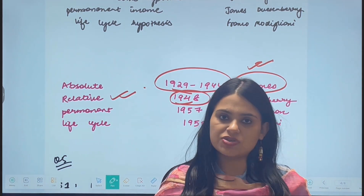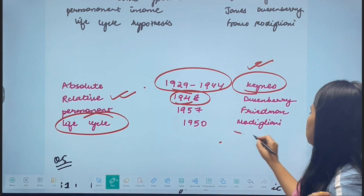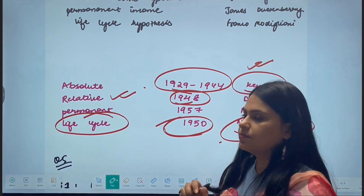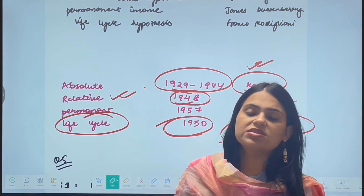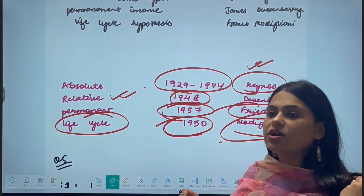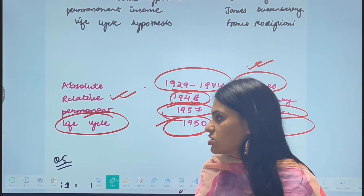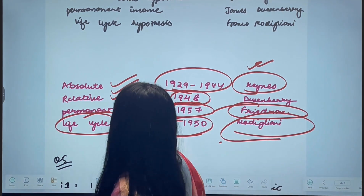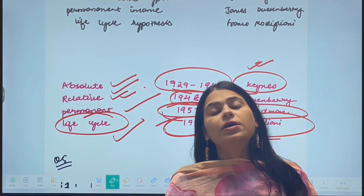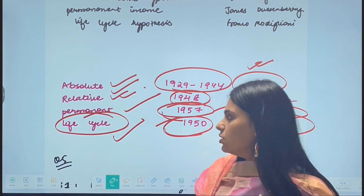The third hypothesis is the life cycle hypothesis, given by Modigliani, which came in 1950. The fourth and final hypothesis is the permanent income hypothesis, given by Friedman, which came in 1957. So the chronological order is: absolute income hypothesis, relative income hypothesis, life cycle hypothesis, and permanent income hypothesis. Exams may ask either who introduced each hypothesis or in what order they appeared — you should know both.